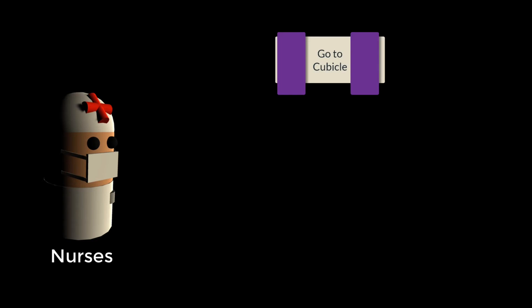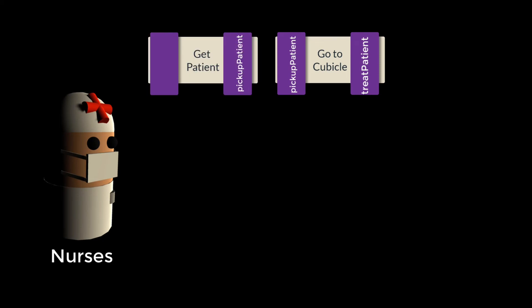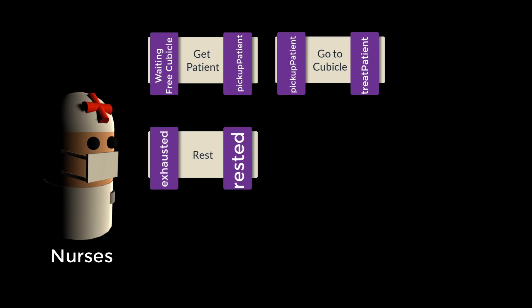Our nurse character is going to be a little more simplistic and have two sets of plans to choose from. The first will be to treat a patient. Their ultimate goal is 'treat patient,' and that's going to require a plan of picking up a waiting patient — which will require a patient to be waiting in the first place, as well as there being a free cubicle available. This will then link to 'go to cubicle' where treatment takes place, satisfying the 'treat patient' goal. To make the nurse a little more interesting, rather than standing around when there's nothing to do, there's also going to be a rest goal that triggers when the nurse becomes exhausted, and the nurse will then go to the break room.